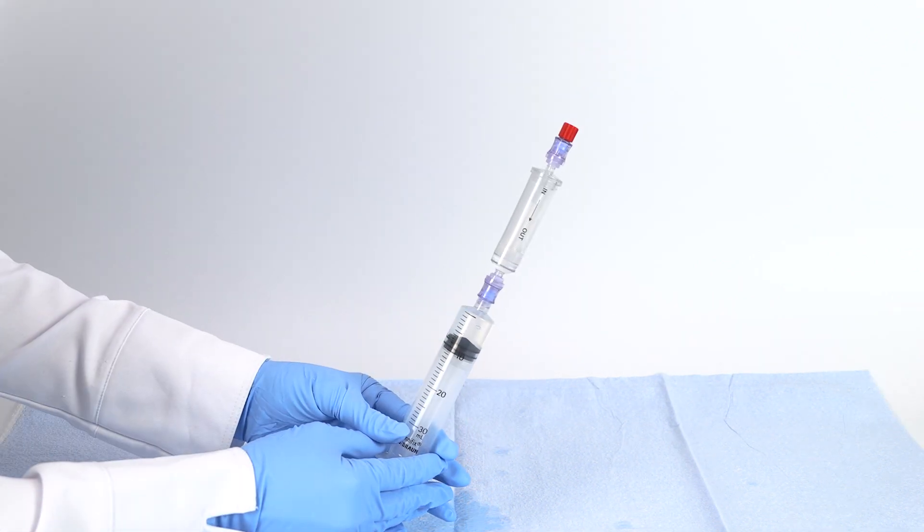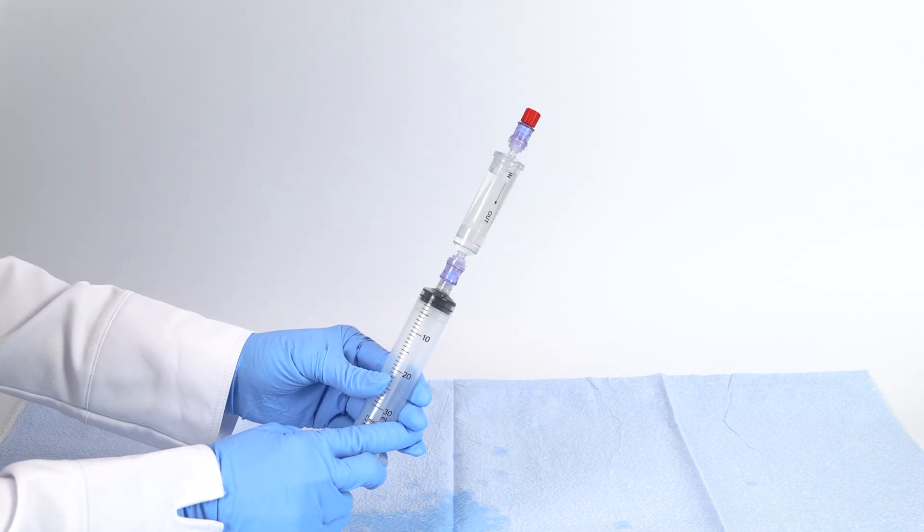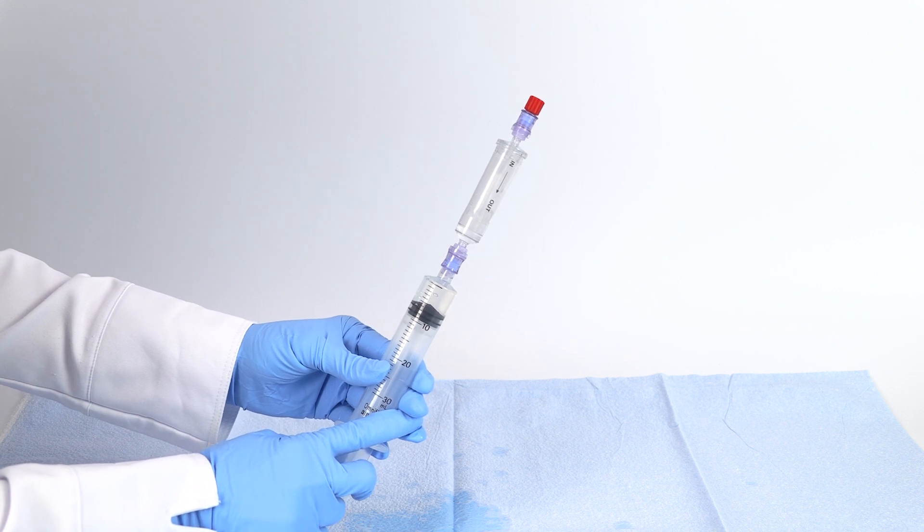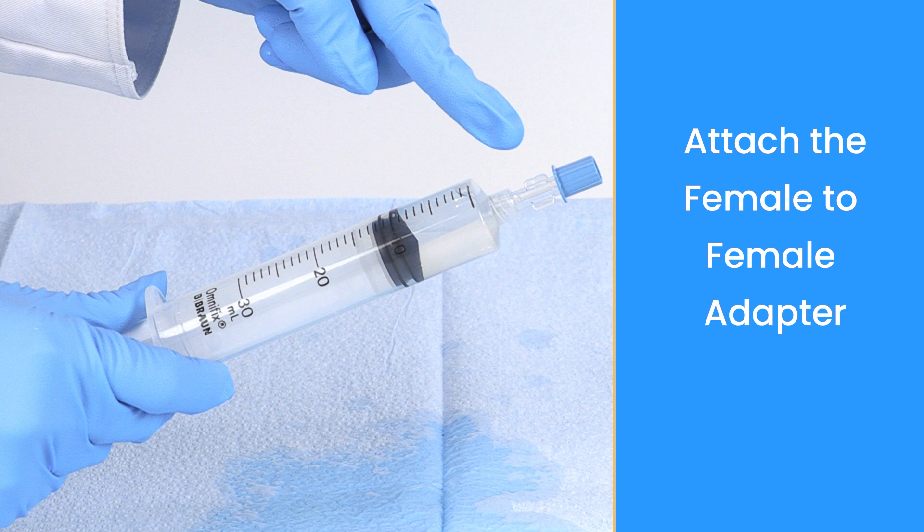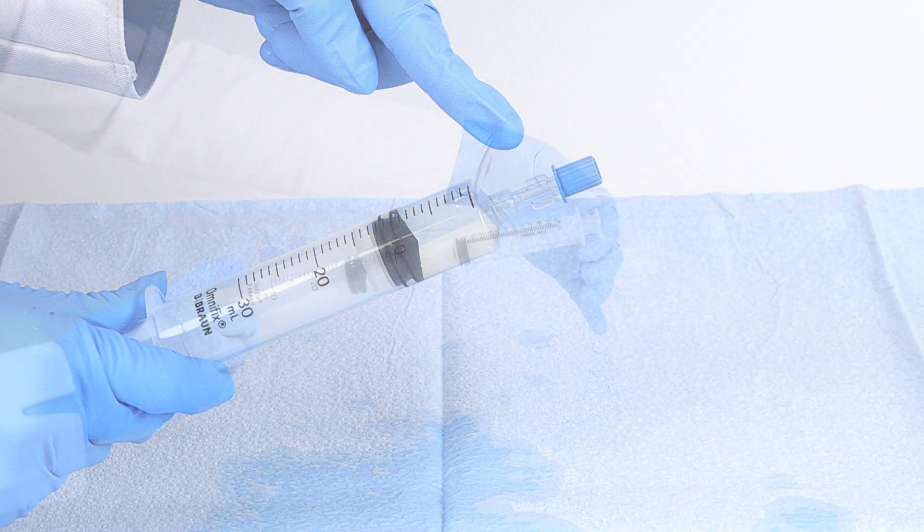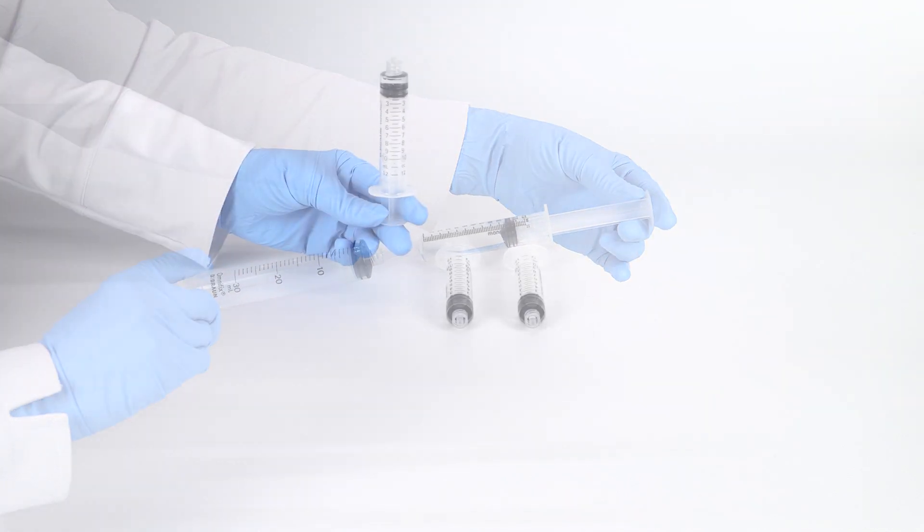Connect the heparin syringe to the outport of the BMA filter and prime the filter by injecting and removing the anticoagulant. Transfer the heparin to three 12-milliliter syringes. Put one milliliter of heparin in each syringe.